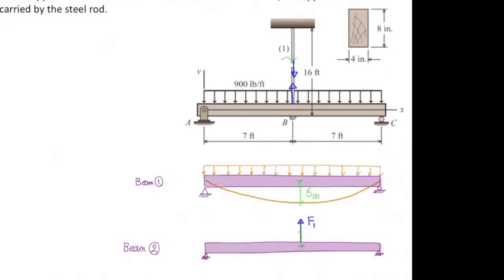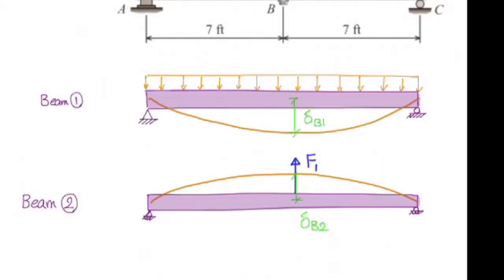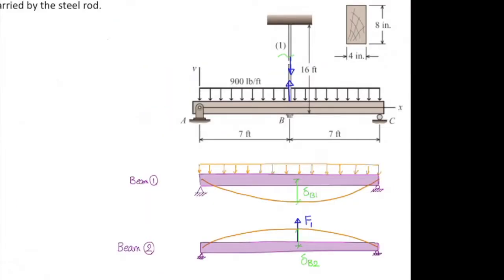The first beam deforms downward like this. So we need to determine how much is deflection of that beam at that point, then determining deflection of the second beam at the same point at the middle. Now, pay attention carefully. We have two deflections. What would be the compatibility of deformations in this case? Can I say delta B1 plus delta B2 is zero? It is not zero anymore. It is not fixed support. It is not a roller support. The rod deforms itself. So I need to take care of how much is the elongation of that rod.